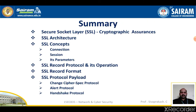In summary, we have covered the Secure Socket Layer and its three cryptographic assurances: authentication, confidentiality, and message or data integrity. We also covered SSL architecture, SSL concepts such as connection and session, parameters of connection and session, and the SSL record protocol and its operation including fragmentation, compression, creation of the MAC algorithm, and the symmetric encryption process. We also covered how the SSL record header is created and appended for transmission, and the record format consisting of content type, minor version, major version, and the payload.